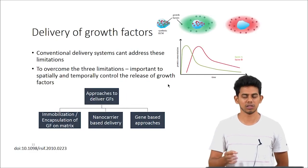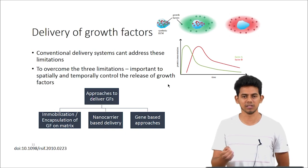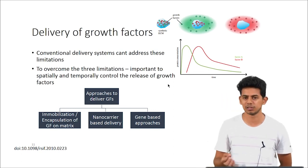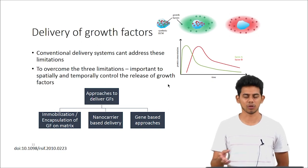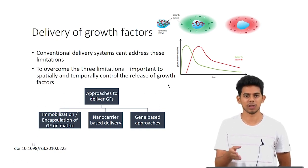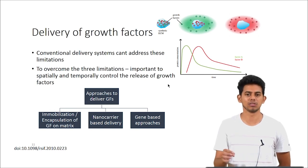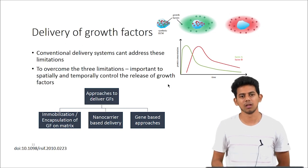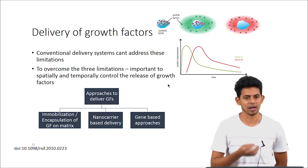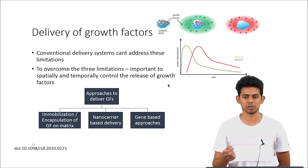Advanced drug delivery systems provide a temporally and spatially controlled release profile, giving a sustained release of growth factors for a prolonged period — something conventional delivery cannot do. A large dose of growth factor is not required when using a delivery system, and it can act at the right site alone, thereby reducing side effects. It also protects growth factors from the biological environment, reducing the rate of degradation. The main approaches include immobilization or encapsulation onto scaffolds or matrices, nanoparticles for delivery, or gene-based approaches using nucleic acids.